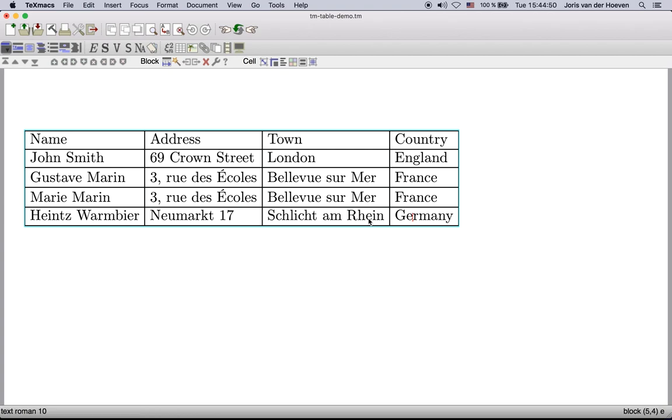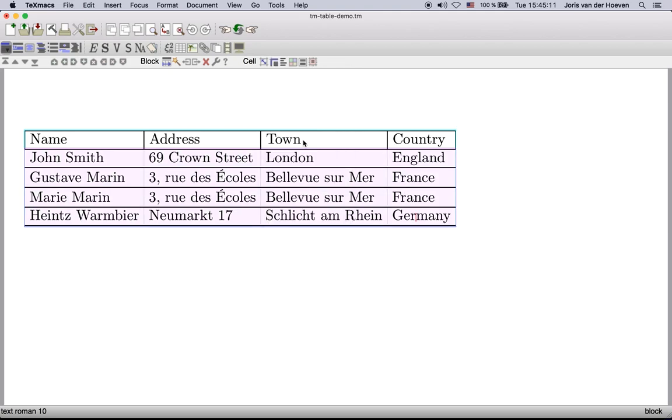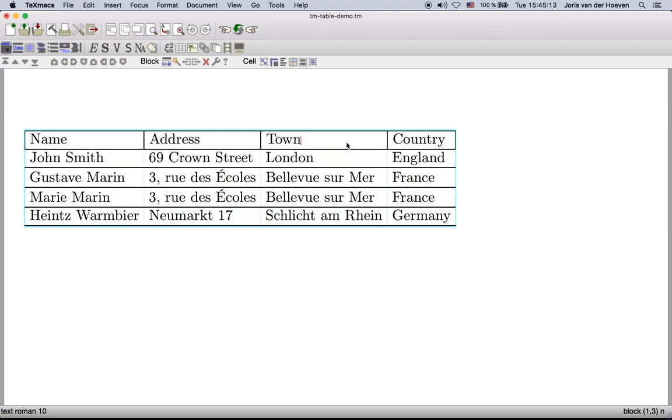The properties of individual cells or a selected block of cells can be changed using the icons in this group here. For instance you may change the border properties as follows. You may also specify the amount of padding around the borders of each cell.